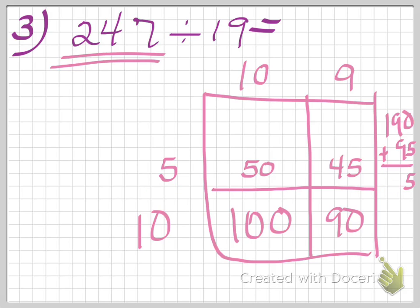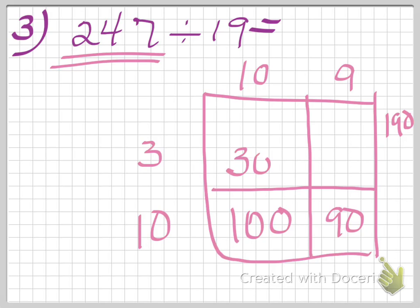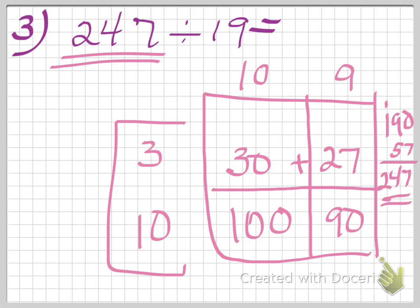So I know 5 is too big, and I'm going to try again with a smaller number. Let me try 3 and see if that works. 3 times 10 is 30, and 3 times 9 is 27. So 30 plus 27 is 57. 0 plus 7 is 7, 9 plus 5 is 14, 13 plus 1 is 247 — hey, that one worked! That's the number I started with. Adding up the quotient numbers: 10 plus 3 is 13. 13 is my quotient.